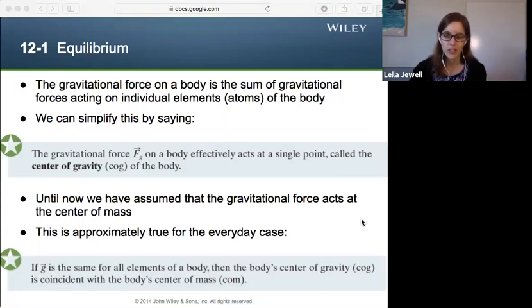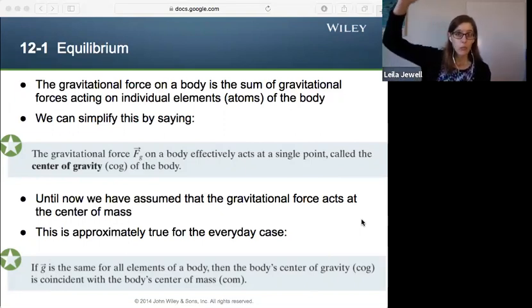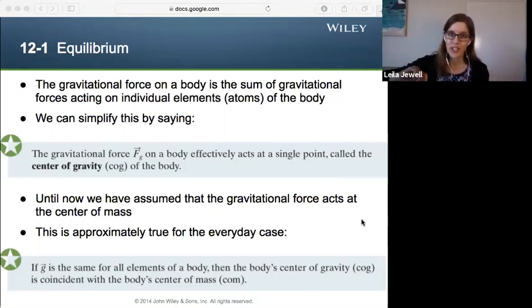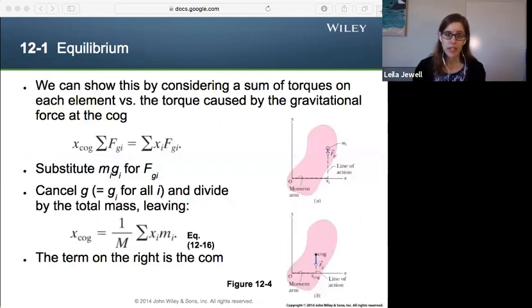Key is that it is the same if g is the same for all elements of the body. What does this mean? Well, if you have, say, a skyscraper, as it gets really, really high up from the Earth, this has to be a really tall skyscraper, the value of g, the acceleration due to gravity, will change very slightly. And so that's something to account for, that the center of gravity might not be exactly the same as the center of mass when you account for the fact that g is changing. But if g is the same, which it really is in the everyday case, then the cog is equal to the com.